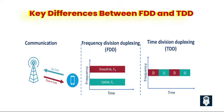Now we compare key differences between FDD and TDD. Frequency division duplexing (FDD) and time division duplexing (TDD) are two duplexing techniques used in communication systems. First, separation of uplink and downlink: in FDD, uplink and downlink transmissions are separated by allocating different frequency bands — the uplink and downlink channels operate simultaneously but on separate frequencies. In TDD, uplink and downlink transmissions are separated based on time — the available transmission time is divided into alternating time slots, with each slot dedicated to either uplink or downlink communication.